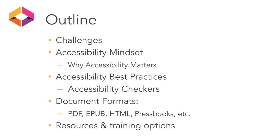Today we are going to first acknowledge that there are lots of accessibility challenges. Then we're going to share some talking points about why accessibility matters, so that we can promote the idea of having an accessibility mindset. Then we're going to cover some of the specific best practices and how to use them, as well as a few accessibility checkers you might want to use. Then we'll briefly touch on some accessibility considerations for different types of OER documents, such as PDF and ePubs. Finally, we'll share some resources and training options, including any that you might be aware of and want to share with the group.